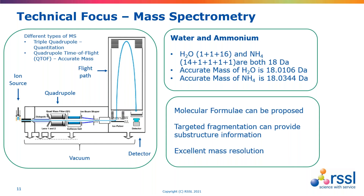The most important part within a QTOF is the time of flight. The system is designed such that we are fully aware of the distance of the flight path. Small mass-to-charge ratio ions follow that path very quickly, whereas larger ions follow it more slowly. Using calibrated ions and the simple equation speed equals distance over time, we are able to generate an accuracy of mass ions to as many as four or even five decimal places.